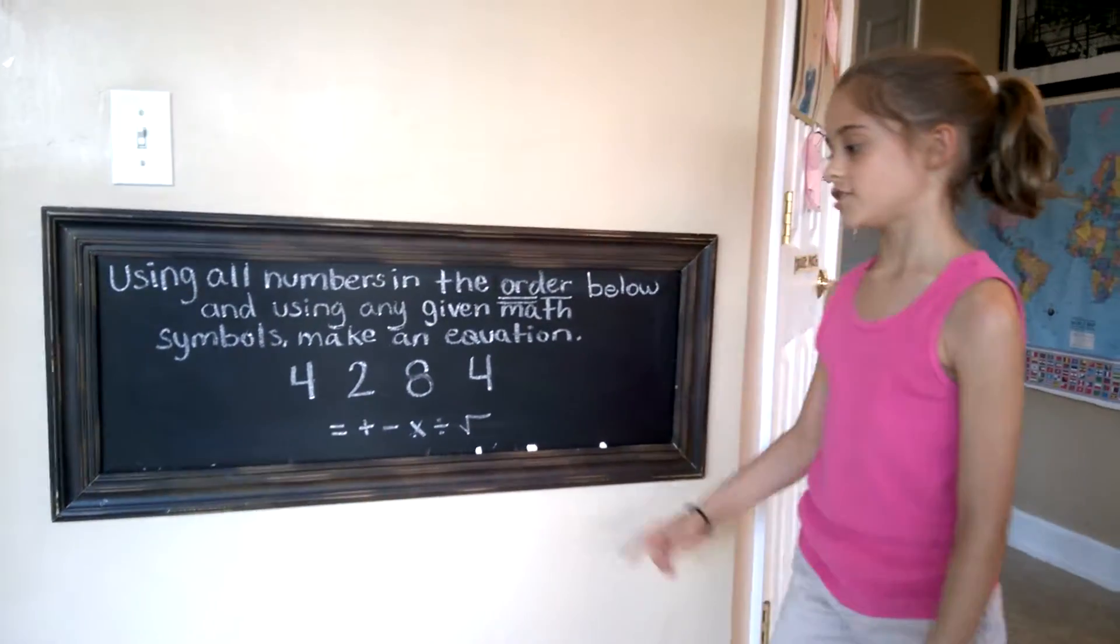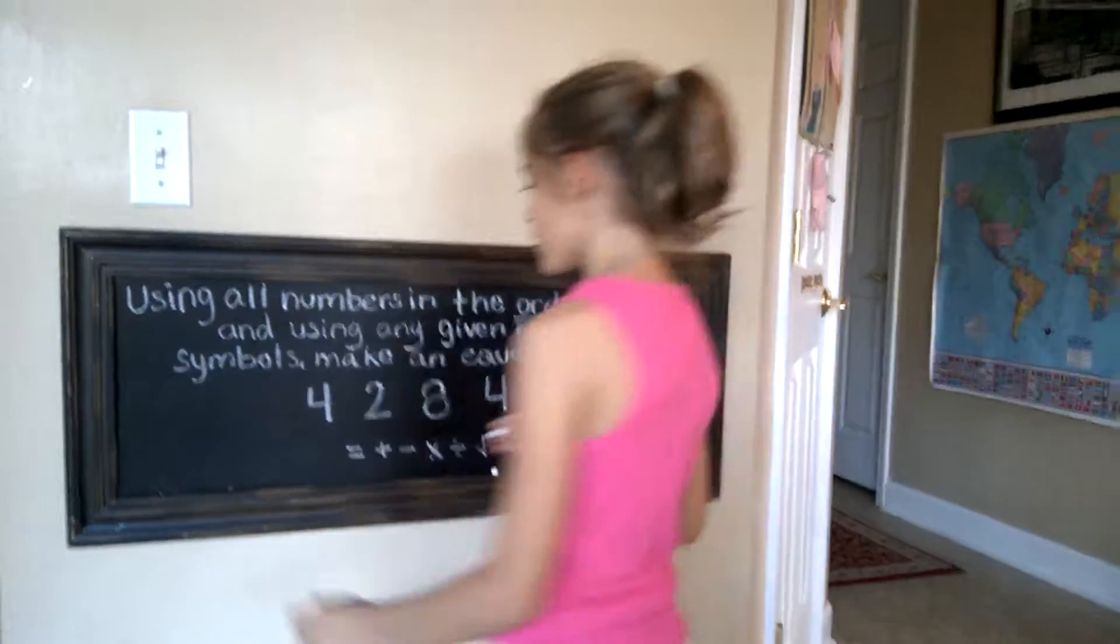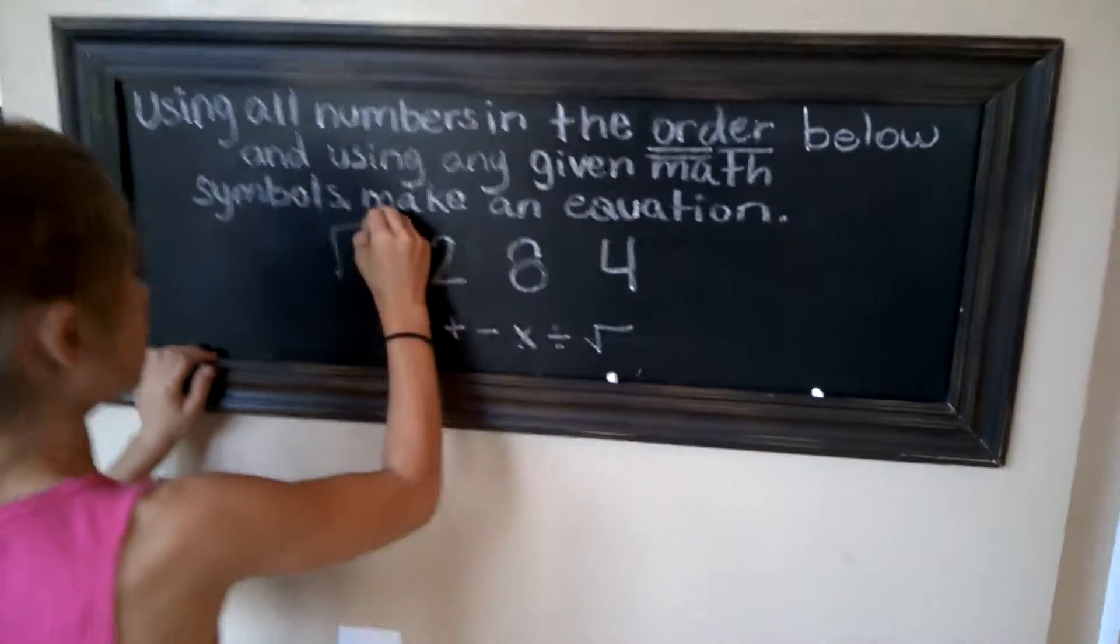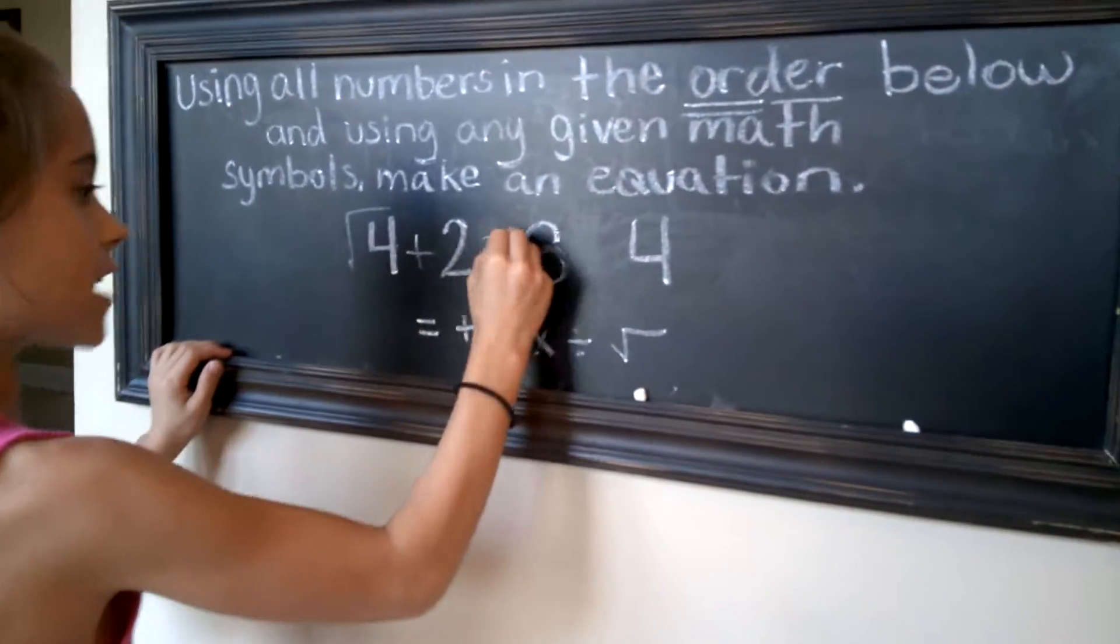Another way to create an equation using these numbers is the square root of 4 plus 2 equals 8 minus 4.